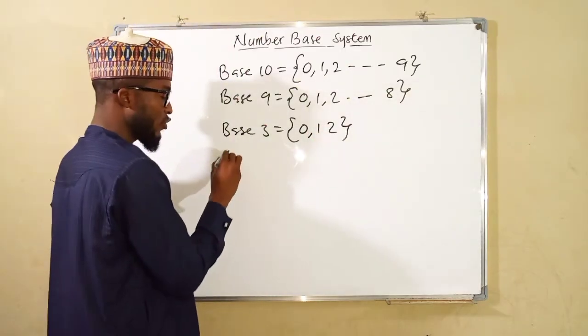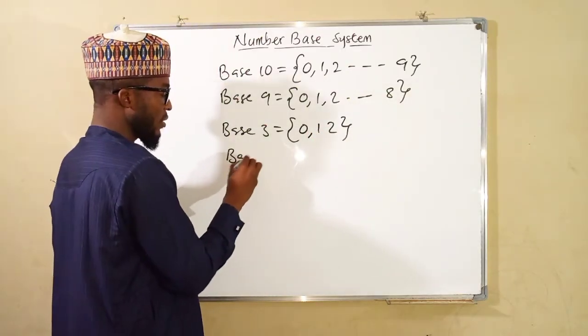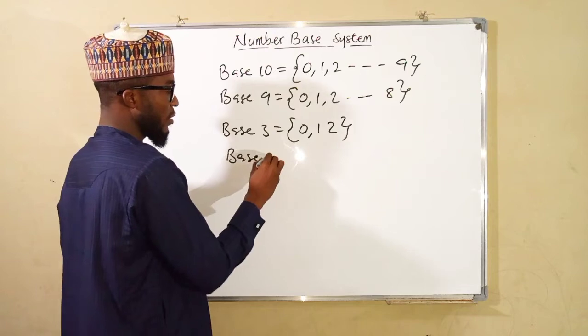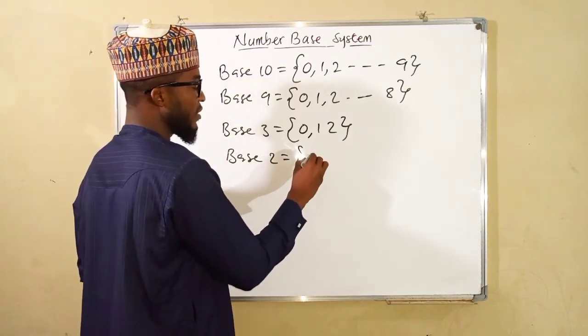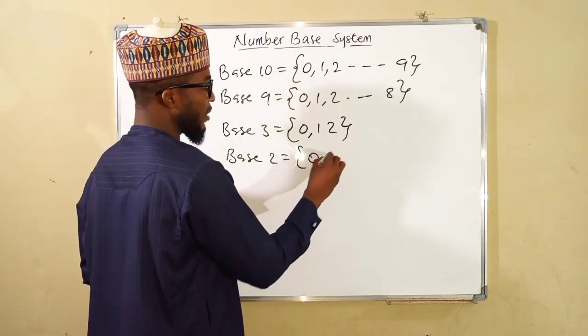And if you are talking about base 2, you can only see 0 and 1.